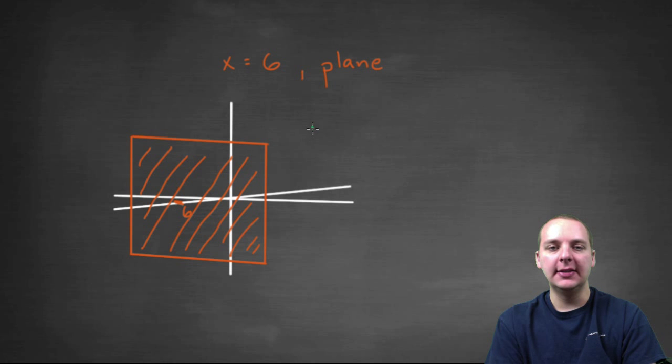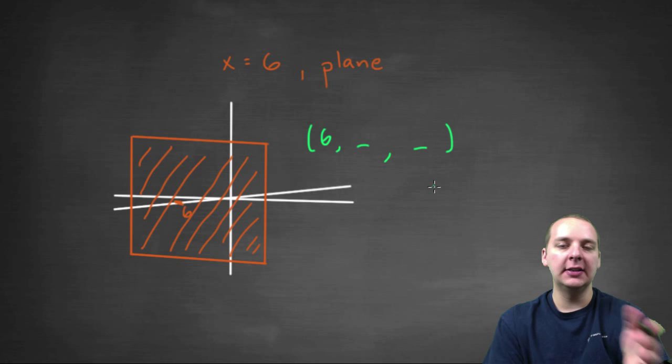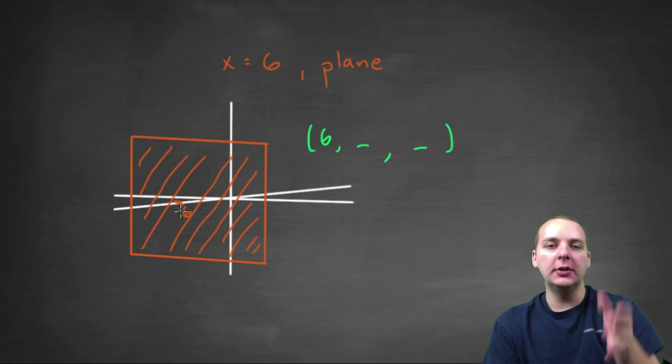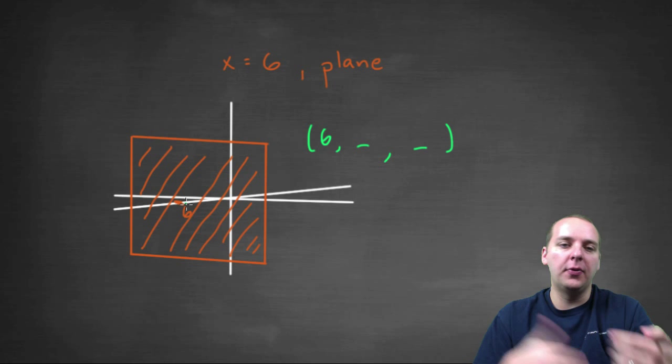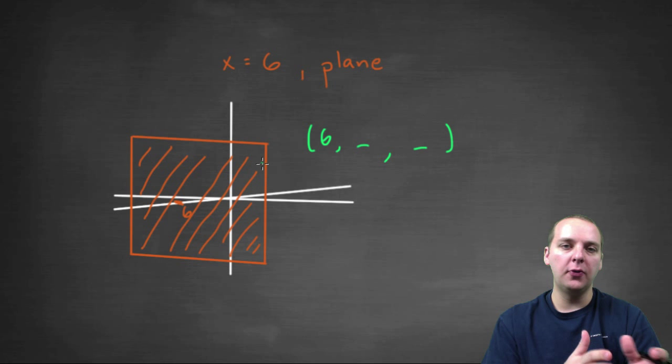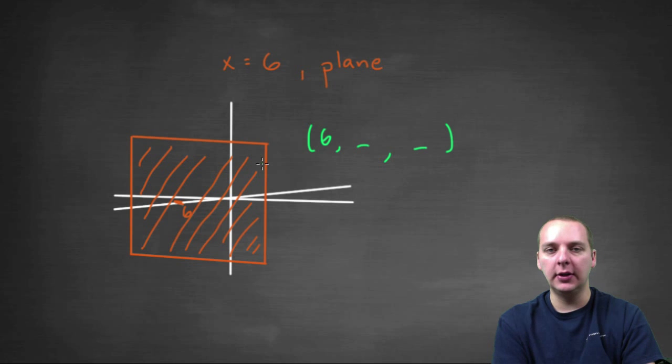Basically what's happening is the x coordinate is always six. So six zero zero, six one two, six eight negative seven. And so if that happens, all the points would lie in a plane where the x coordinate is always six. So it's shifted out from the y, z plane a little bit. So it started in spherical form, and we converted it into an equation in rectangular form.